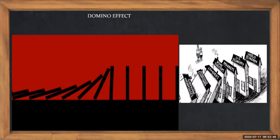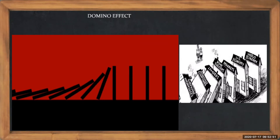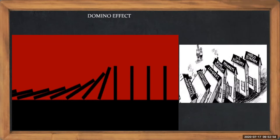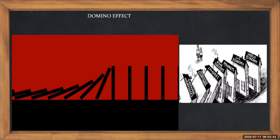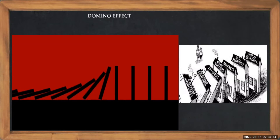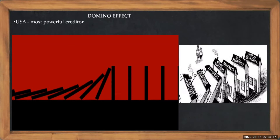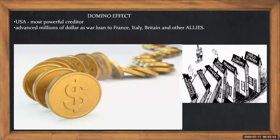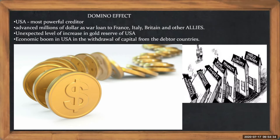If you look at this picture, one house has fallen and another has fallen, and the last two still standing — it's just a matter of time before they fall. So in the domino effect for world trade, everyone is affected; no one can escape it. USA was the most powerful creditor and gave millions of dollars of war loans to France, Italy, Britain and other allies. But there were a lot of wrong choices — there was a boom in USA, but they did not put that money in other places; they put that money to build up their own industry.